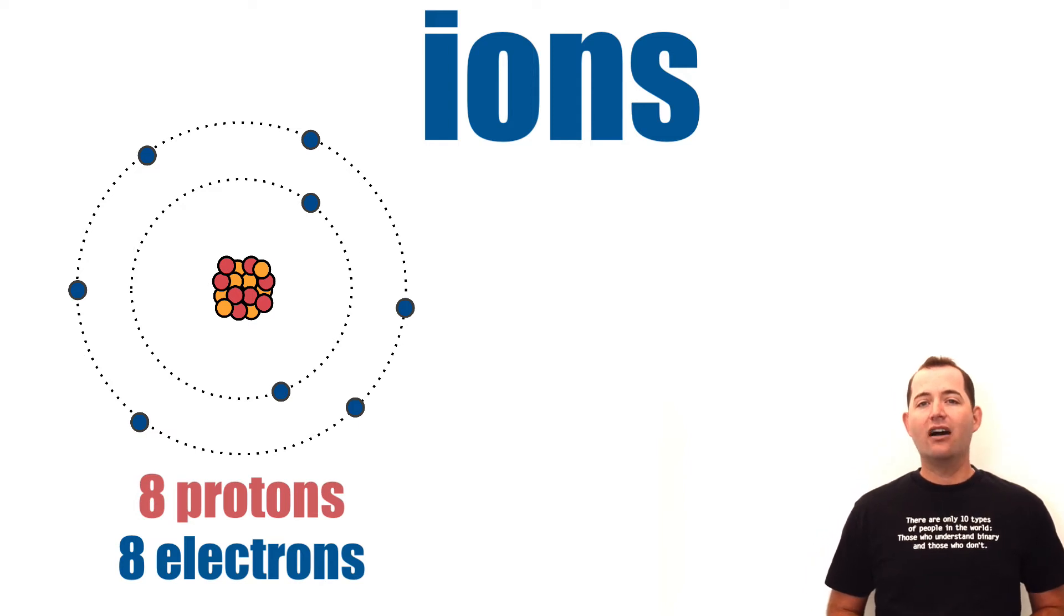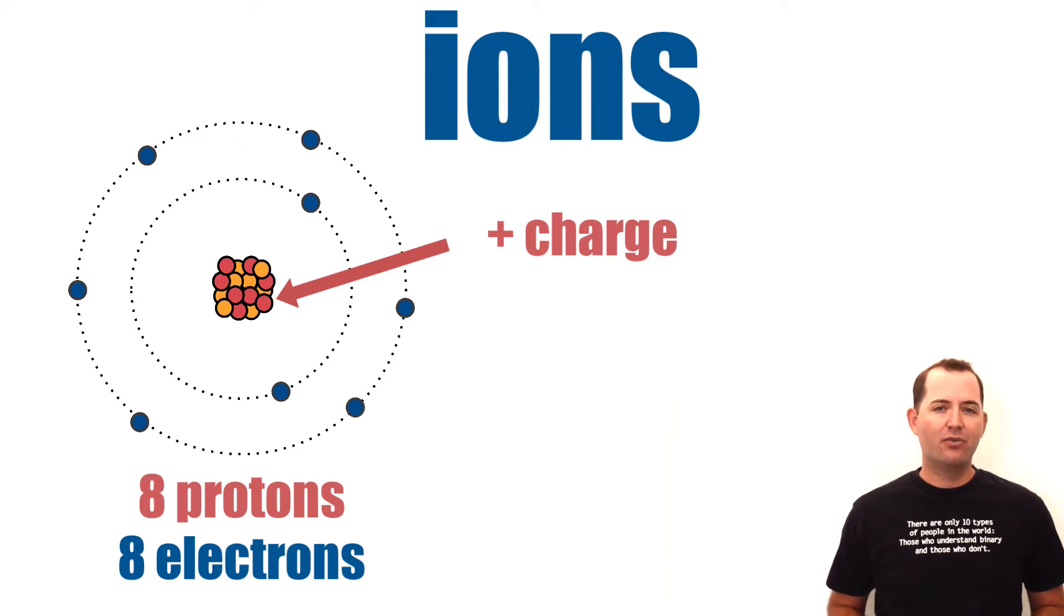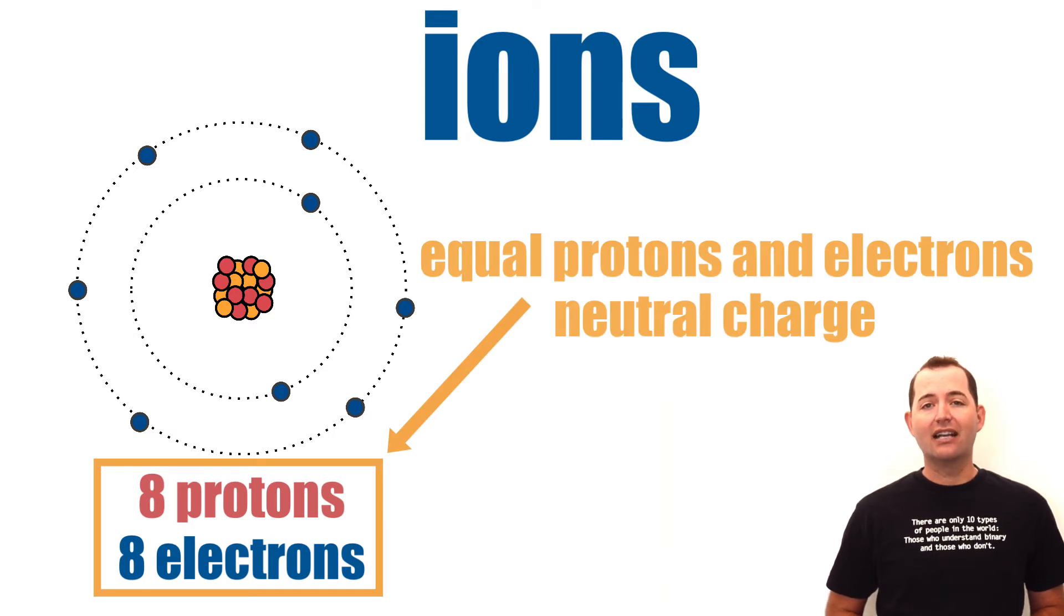Atoms most often have equal numbers of protons and electrons. Each proton will have a positive one charge, while electrons each have a negative one charge. If the number of protons and the number of electrons are equal in an atom, then it will have a neutral charge.